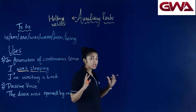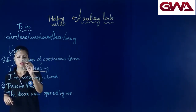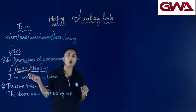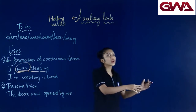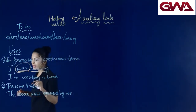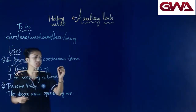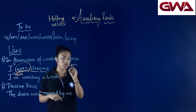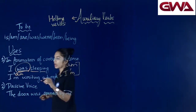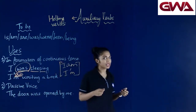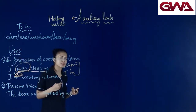तो यहाँ पर continuous tense में sentence है — I was sleeping। मैंने was का इस्तमाल किया बताने के लिए कि मैं सो रही थी। Second sentence को देखते हैं: I am writing a book — मैं book लिख रही हूँ। यह continuous tense में है, और इसलिए मैंने am का इस्तमाल किया। I'm और I am दोनों same mean करते हैं — I'm contraction है और I am full form है। तो am हमारा to be verb है, और इसका इस्तमाल इसलिए हुआ क्योंकि sentence continuous tense में है।